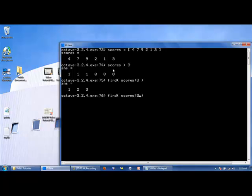If we store these values in an array, let's call it C, we have the values 1, 2, and 3 stored in the array C. So we can say scores of C, and that will return to us the values stored in the first, second, and third elements of scores.